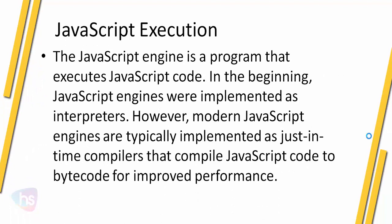JavaScript execution follows an engine, which is a program that executes JavaScript. In the beginning, JavaScript engines were implemented as interpreters. However, modern JavaScript engines are typically implemented as just-in-time compilers that compile JavaScript code to bytecode for improved performance. They introduced bytecode as a lightweight execution mechanism, allowing very lightweight processes to execute with the help of JavaScript.